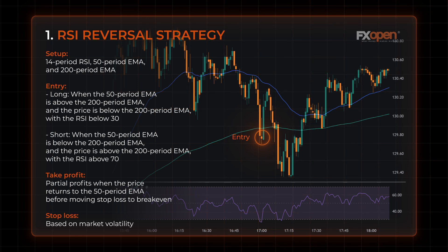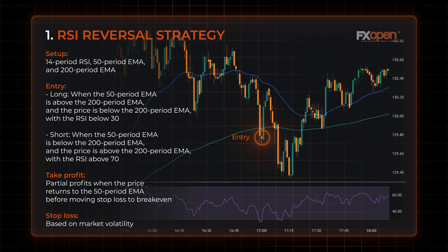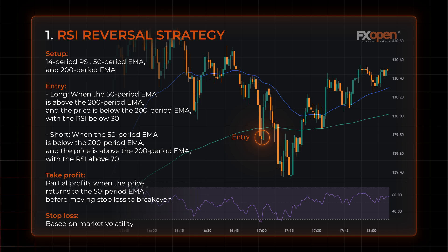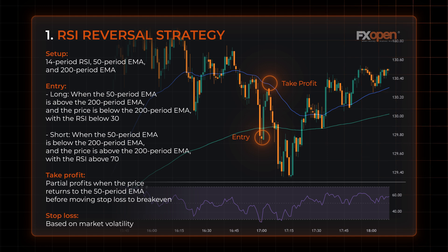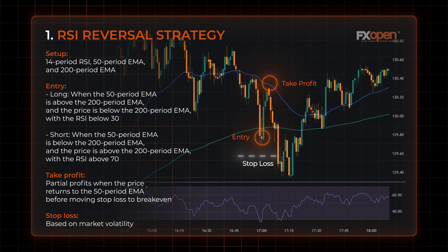For short trades, traders may open a position when the 50-period EMA is below the 200-period EMA and the price is above the 200-period EMA with the RSI above 70. Traders may take partial profits when the price returns to the 50-period EMA, before moving their stop loss to break even. The stop loss level is based on market conditions.